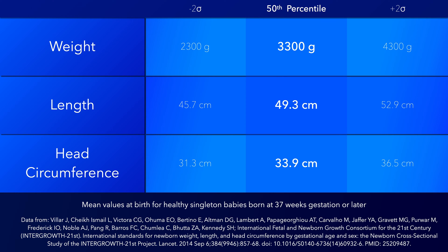To reiterate, these are the overall mean values for healthy singleton babies without congenital malformations born at 37 weeks gestation or later. However, data ranges for anthropometric measures depend on several factors, such as gestational age, sex, and race.